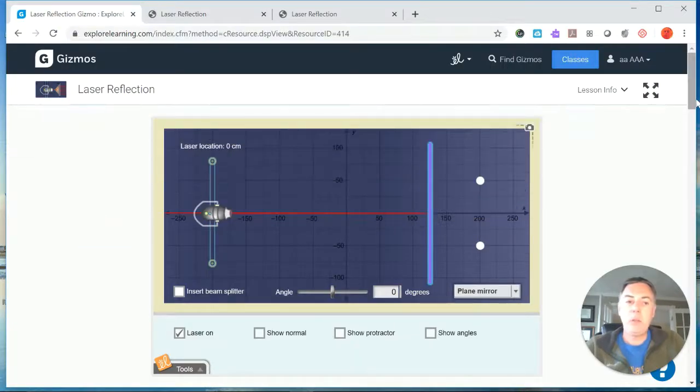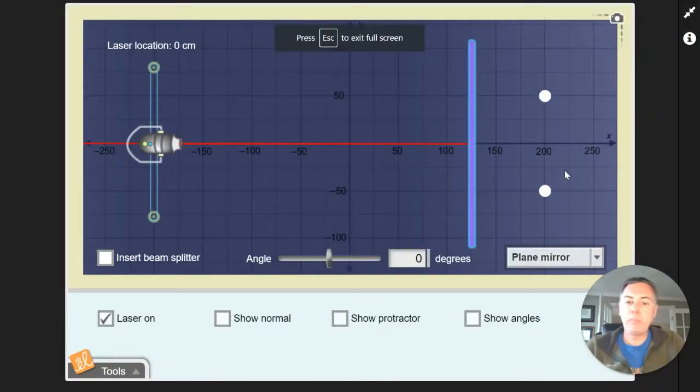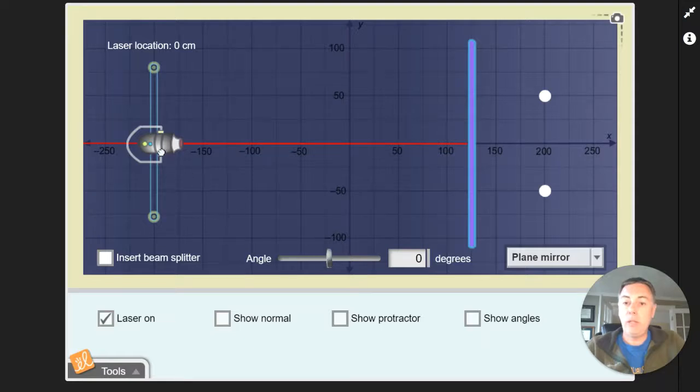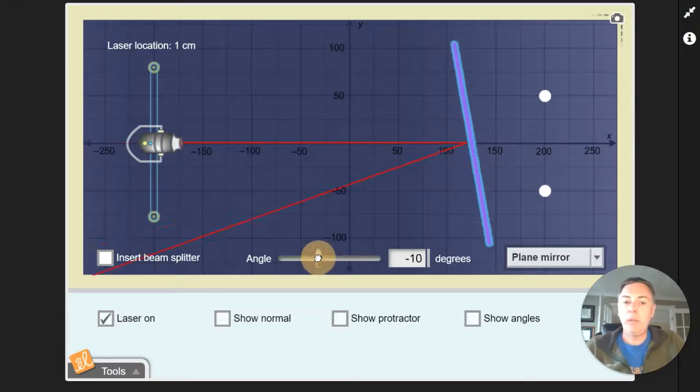So if we go back to the gizmo, let's make it a little bit bigger. The laser is already going—that's what this red line is right over here. What you can do is you can actually move this around so you can see where it's going, and you can also change the angle.